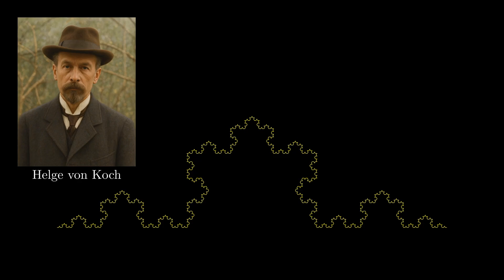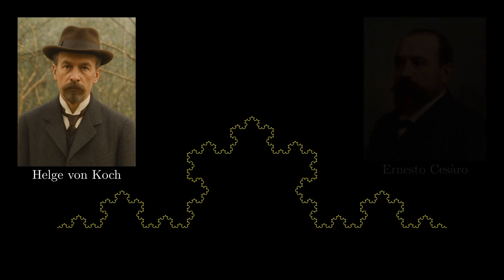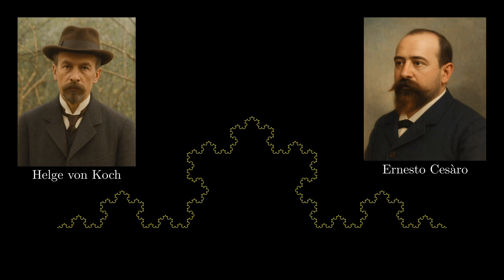The following year after Koch's paper was published, the Italian mathematician Ernesto Cesàro provided an alternative construction of the Koch curve based on isosceles triangles. We will use his construction to show why the Koch curve has no tangent at any point on the curve.